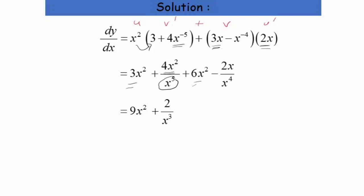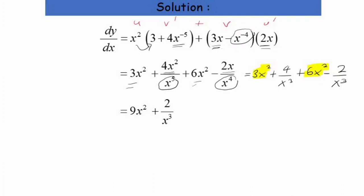Continuing the expansion: 3x squared times 2x gives 6x squared, and negative x to the power of negative 4 times 2x gives negative 2x over x to the power of 4. Simplifying, we get 3x squared plus 4 over x cubed plus 6x squared minus 2 over x cubed. Combining like terms: 3x squared plus 6x squared gives 9x squared, and 4 over x cubed minus 2 over x cubed gives 2 over x cubed. So the answer for Question A is 9x squared plus 2 over x cubed.